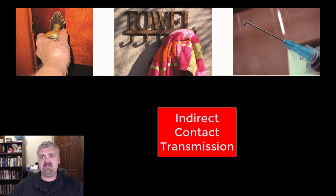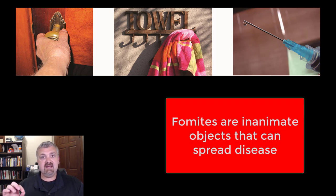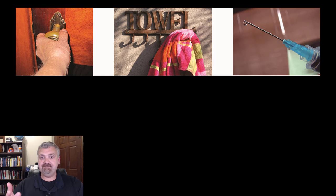Next here we have indirect contact transmission, and this is going to involve touching an inanimate object. So instead of me touching you and you getting sick from that, I touch something that you then touch. So this inanimate object that can spread disease is called a fomite. Fomite is a very important term. Here we see a door handle, a towel, and a needle.